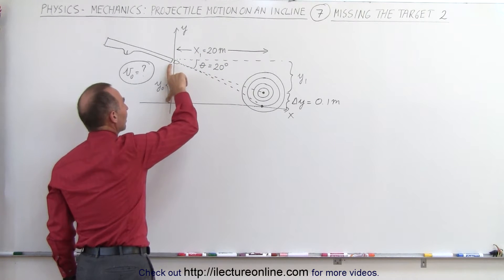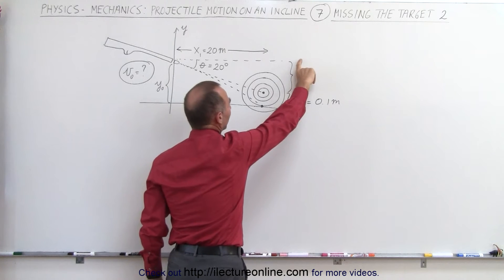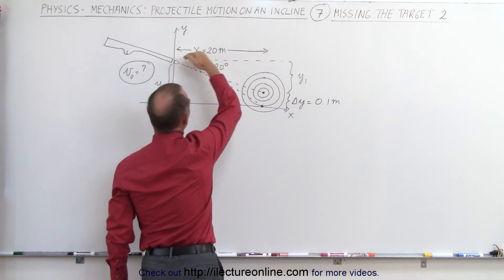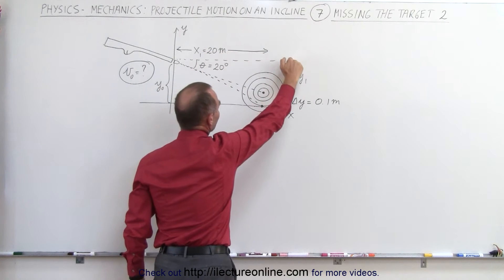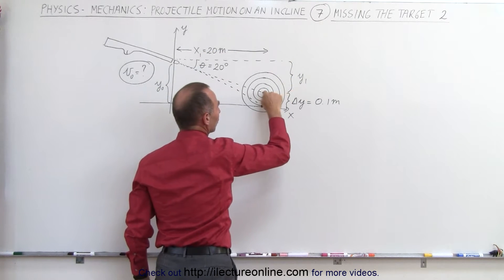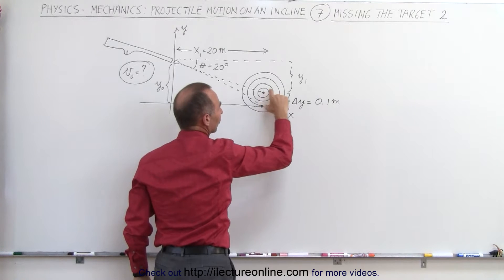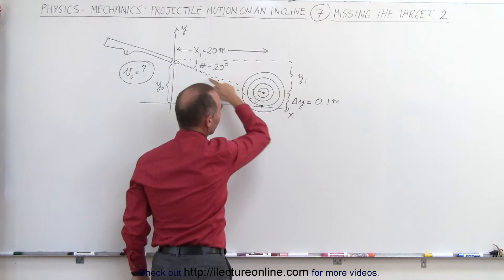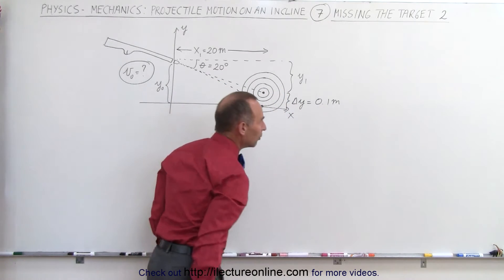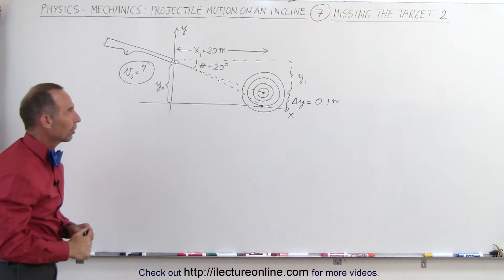The initial height here can be found by figuring out what y1 is equal to — the distance from the location where the bullet is fired in the horizontal direction and where the target is, where we're aiming at. We're going to be below that when the bullet finally hits, and that number is 0.1 meter below the center of the target.